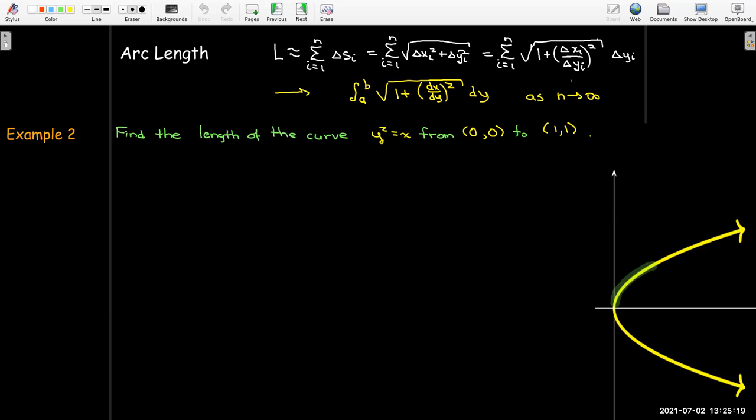So let's use that formulation to calculate the length of the curve x equals y squared from the origin to the point (1,1). Now if I use my new formulation I'll have a dy integral which means everything has to be in terms of y including the bounds. Well in this case both the x and y coordinate of each endpoint is the same so it's from 0 to 1.